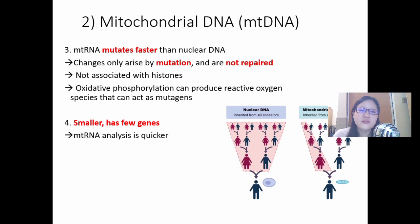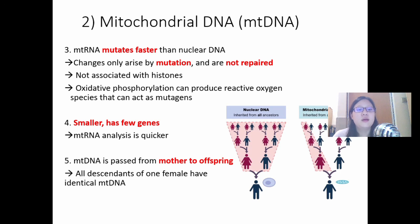Number four, it has fewer genes, so analysis of this mitochondrial DNA is quicker. Number five, last but not least, mitochondrial DNA is passed from mother to offspring. Only. Nuclear DNA is inherited from all your ancestors, but mitochondrial DNA is only from the mom. Your mitochondria, your sibling's mitochondria, are all from your mom. So, it's easier to track, and it's less confusing.